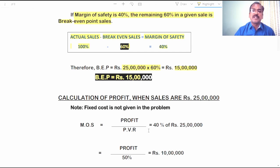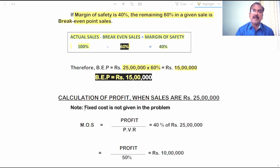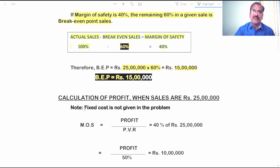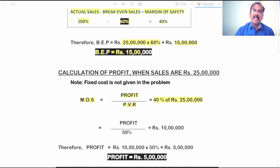In the given sales of 25 lakhs, 15 lakh rupees is the Break-Even Point sales. Now for calculation of profit when sales are 25 lakh rupees — note that fixed cost is not given in the problem. If fixed cost were given, we would calculate contribution as sales into PVR, subtract fixed cost, and get profit. But since fixed cost is not given, we use another approach: MOS is given as 40 percent, so we write: MOS = Profit divided by PVR.